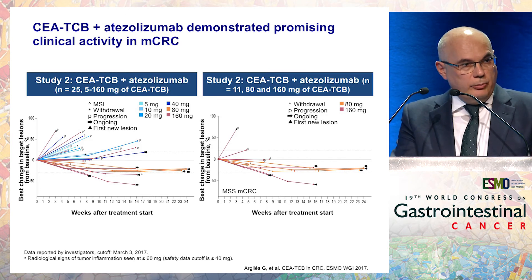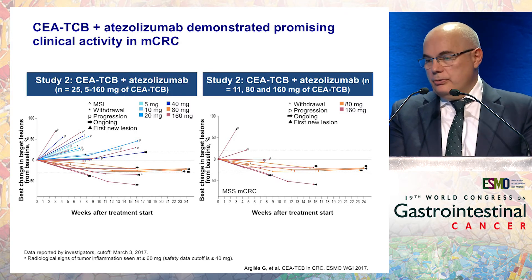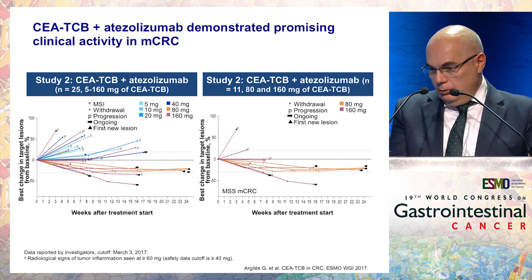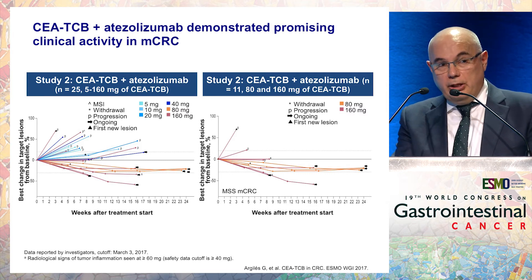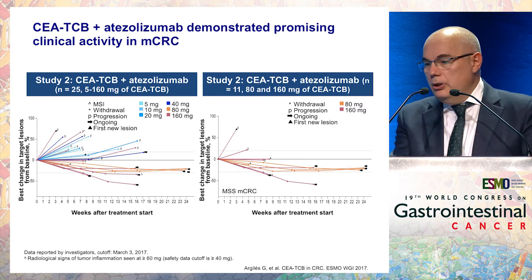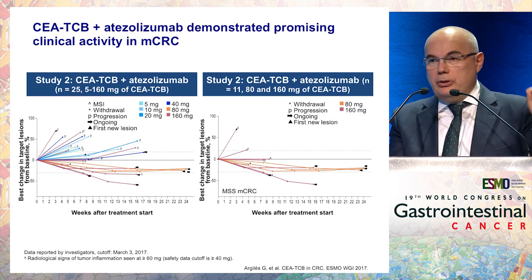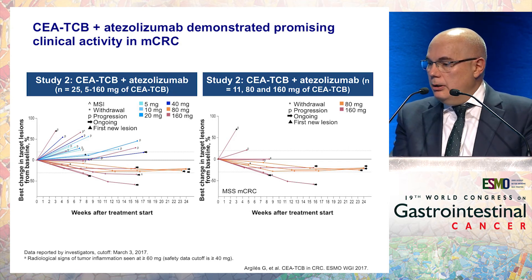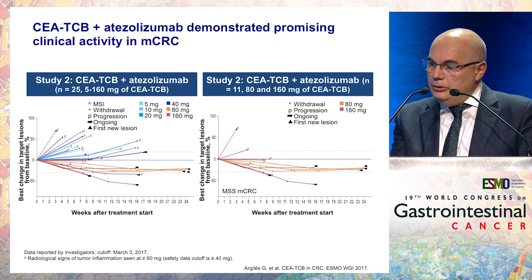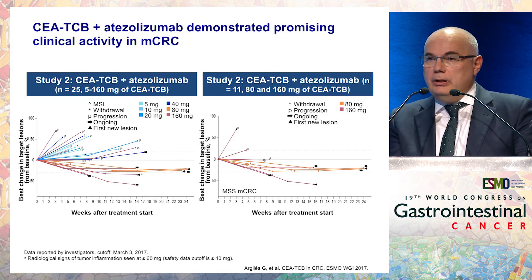Looking at the spaghetti plot for the global population of colorectal cancer patients treated with the combination at all doses — even including those treated at low, non-effective doses — approximately 50% of patients achieved any kind of benefit including stable disease or partial responses, with some sustained over time. Focusing on the 11 patients with MSS tumors — refractory patients treated in the fourth line or beyond at doses of 80 or 160 milligrams of CEA-TCB — 80% of patients had any kind of benefit, with only two patients progressing.